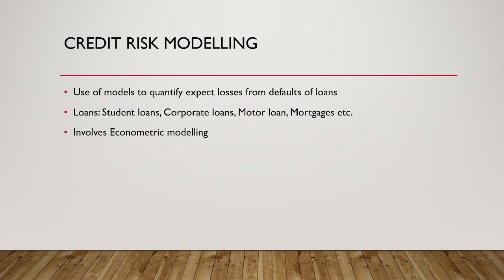Then you have credit risk modeling. In fact, all banks will have a department called credit risk modeling. It's about using models to quantify expected losses from the default of loans. All banks provide various forms of loans — student loans, corporate loans, motor loans, mortgages, SME financing, and so on. There is always a chance of default, and credit risk modeling involves building models that predict the probability of defaults and expected losses.